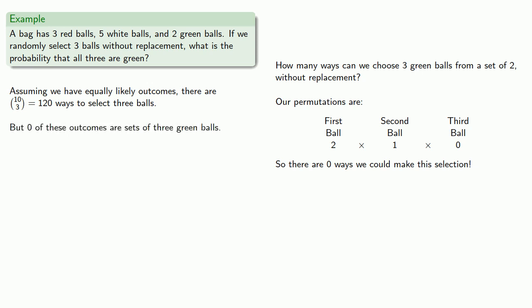And so, in fact, 0 of the outcomes are sets of 3 green balls. And so the probability is 0 out of 120, or 0.